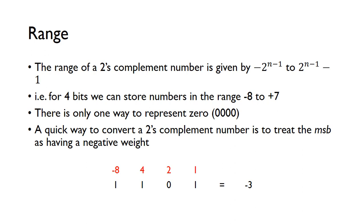Because we now have only one way to represent zero, we're not wasting one of the binary combinations. So our range has actually improved — the minimum negative number we can represent has dropped to minus 8. So before it was minus 7 up to plus 7, but now it's minus 8 up to plus 7.